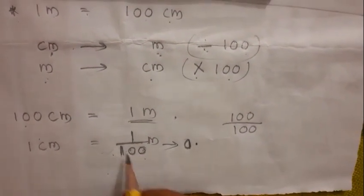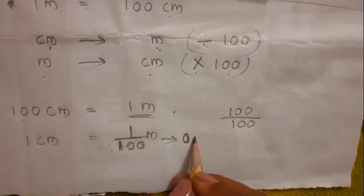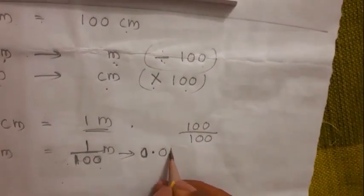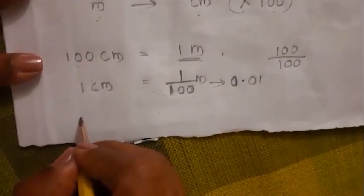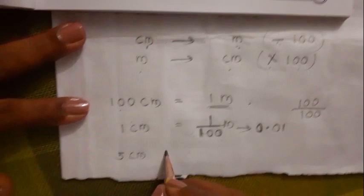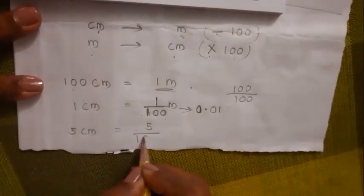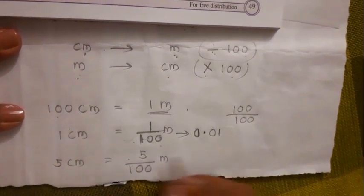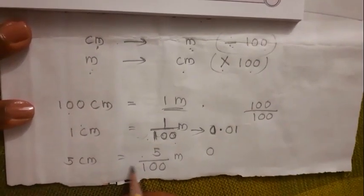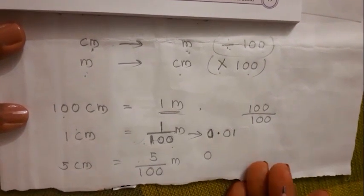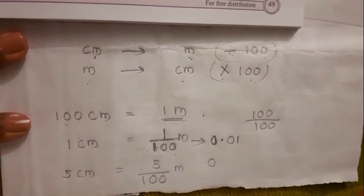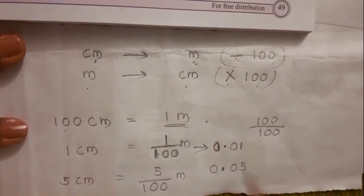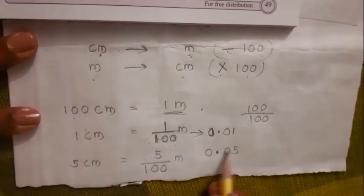After the decimal point, you should have two numbers. Then you write 0 and write the 1 here, giving 0.01. Another example: if you get 5 centimeters, you take 5 and divide by 100. As a decimal form, you write 0, because there are no whole numbers, then a decimal point, then 0 — because it is out of 100.